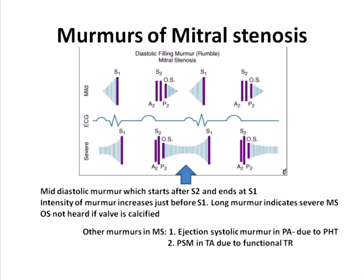The mid-diastolic murmur of mitral stenosis, as shown by the arrow mark, starts after S2, is present through diastole, and ends with S1. Conventionally, the murmur is described as starting from the opening snap — the audible opening of the mitral valve — which occurs due to the tensing and doming effect of the mitral valve as a result of increased left atrial pressure. For beginners: simply remember that the mid-diastolic murmur starts just after S2, is present through diastole, and ends with S1.